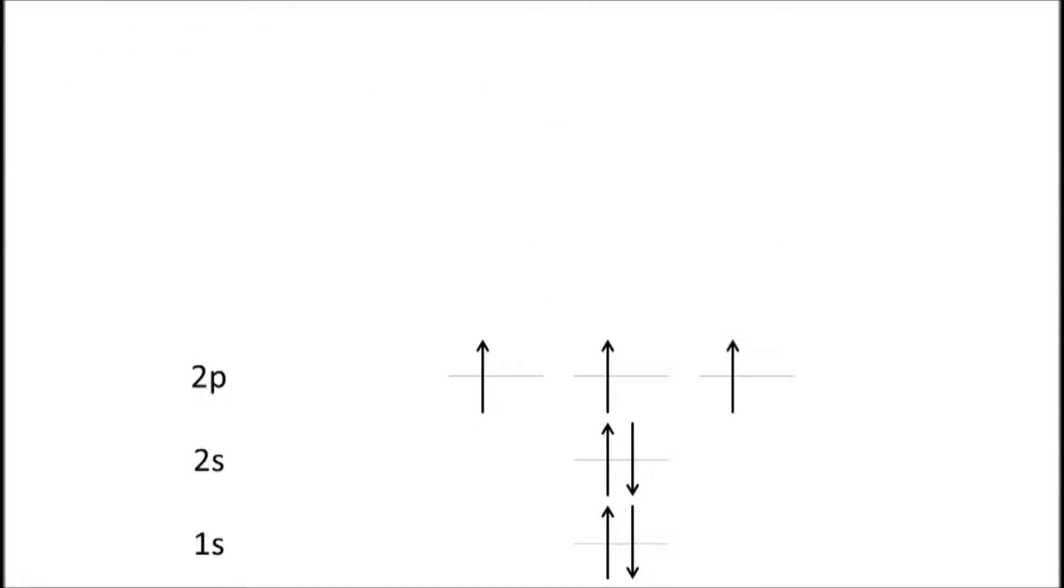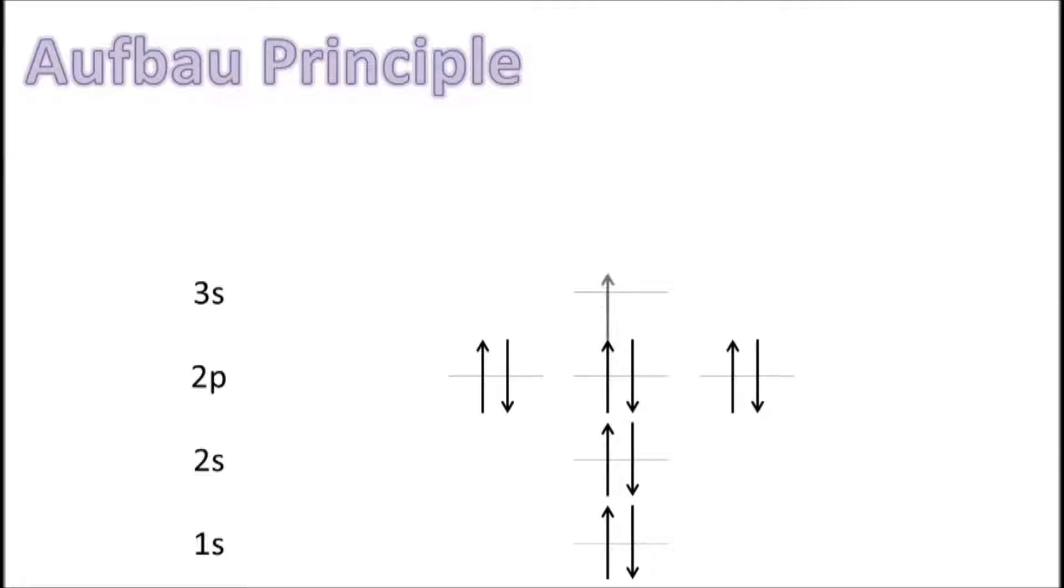Hund's rule dictates that each orbital of a subshell must first be filled with an electron, with all lone electrons pointing in the same direction. Aufbau Principle dictates that each subshell must be fully occupied before the next subshell can be filled.